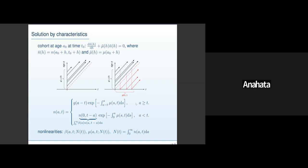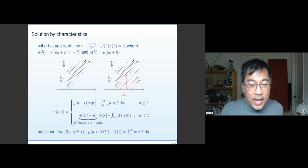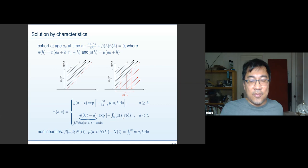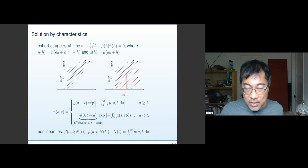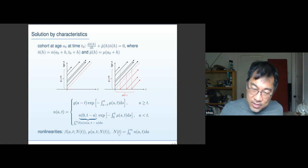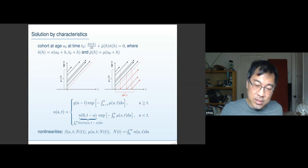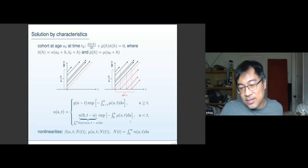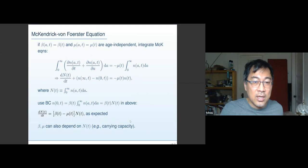We haven't discussed nonlinearities. For example, carrying capacity — where birth or death depends on the total number. These can now depend on total N(T), and you solve the problem self-consistently with forward time stepping. That's relatively simple but must be done numerically to get the age distribution. As a check: if birth and death rates are independent of age, you can integrate this equation to find the total population and you get back the simple result we'd expect — a simple birth-death equation.